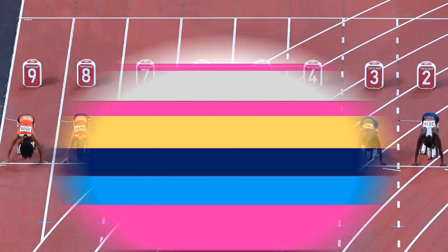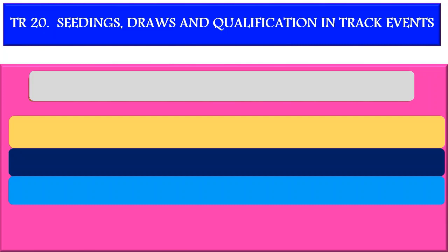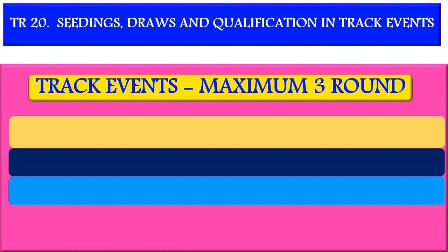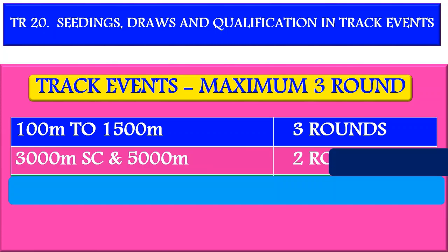This video explains more about seedings, draws, and qualification in track events. There will be a maximum of 3 rounds in track events. Events up to under 1500 meters have 3 rounds. Events of 3000 meter steeplechase and 5000 meters have 2 rounds, and for 10000 meters it is a direct final.